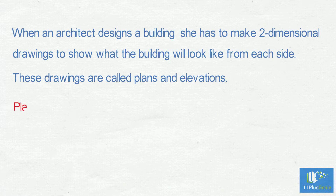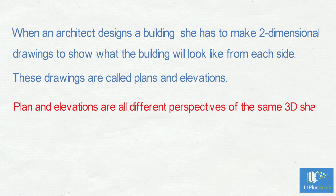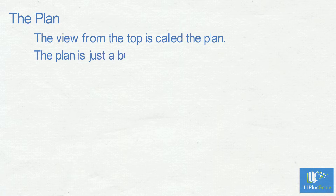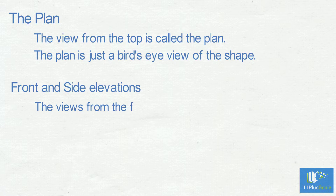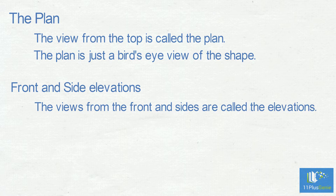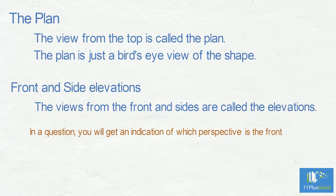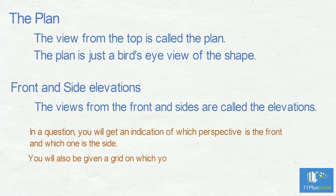Plans and elevations are all different perspectives of the same 3D shape. The view from the top is called the plan — it is just a bird's eye view of the shape. The views from the front and sides are called the elevations. In a question, you will get an indication of which perspective is the front and which is the side, and you will also be given a grid on which you can do your drawings.